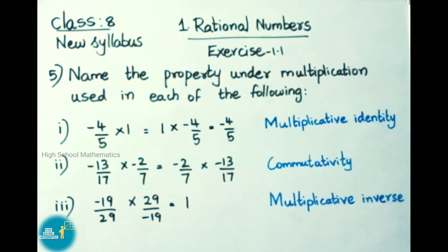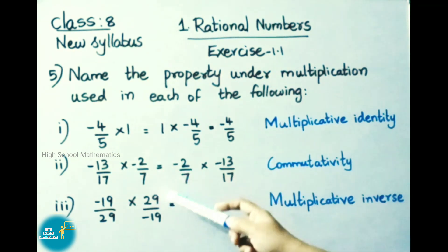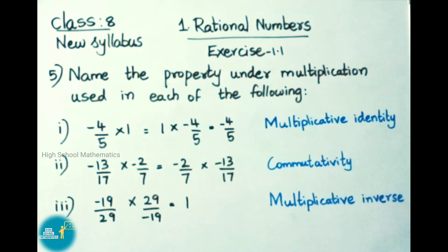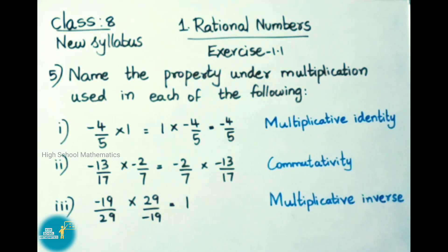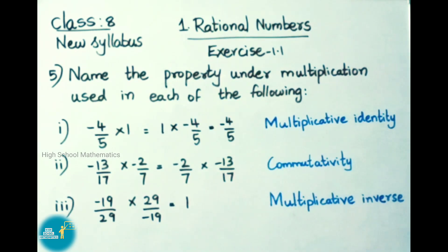See the second one: -13/17 × -2/7 = -2/7 × -13/17. That is A × B = B × A, so the property used here is commutativity, or the commutative property.